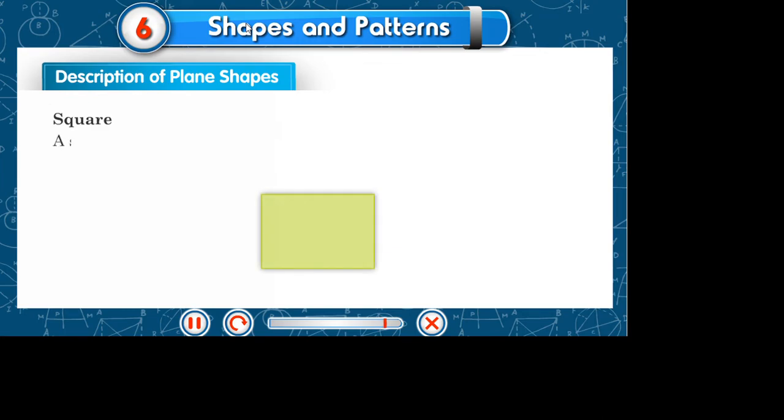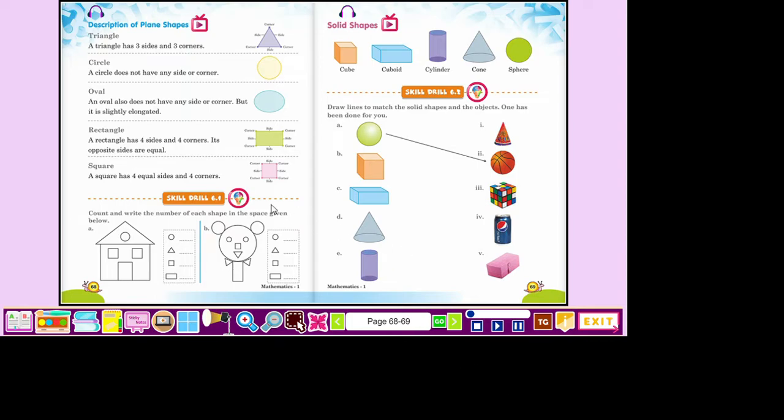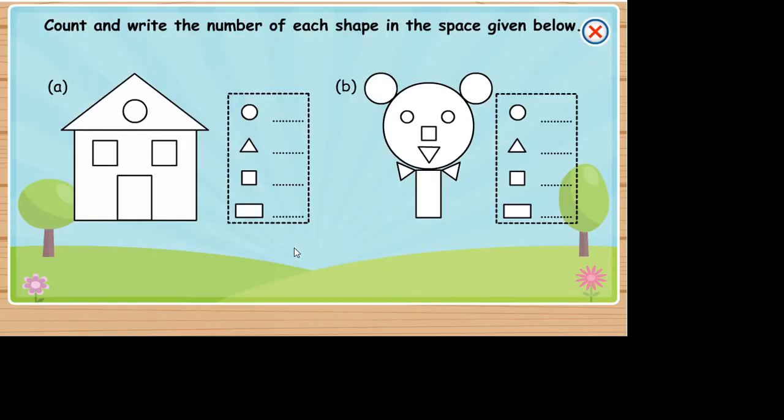Square: A square has four equal sides and four corners. Count and write the number of each shape in the space given below.